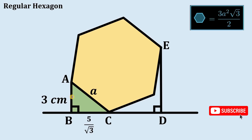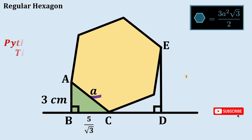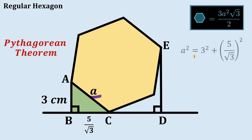We can use the Pythagorean theorem to solve for the value of a. Doing that, we get a² equals 3² plus (5 over square root of 3)². Simplifying: 3² is 9, and (5 over square root of 3)² is 25 over 3.